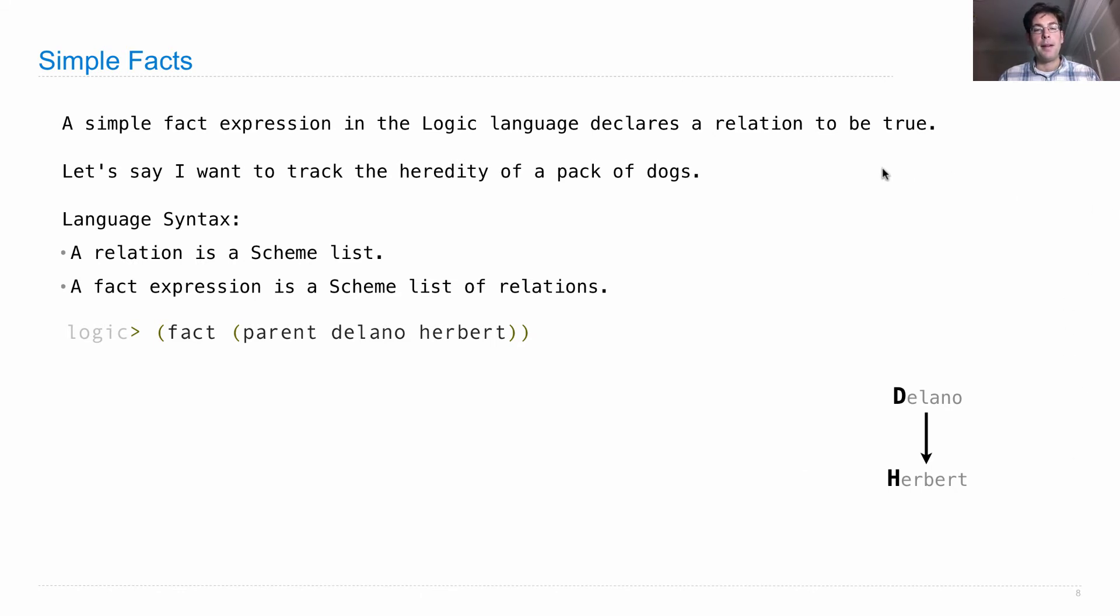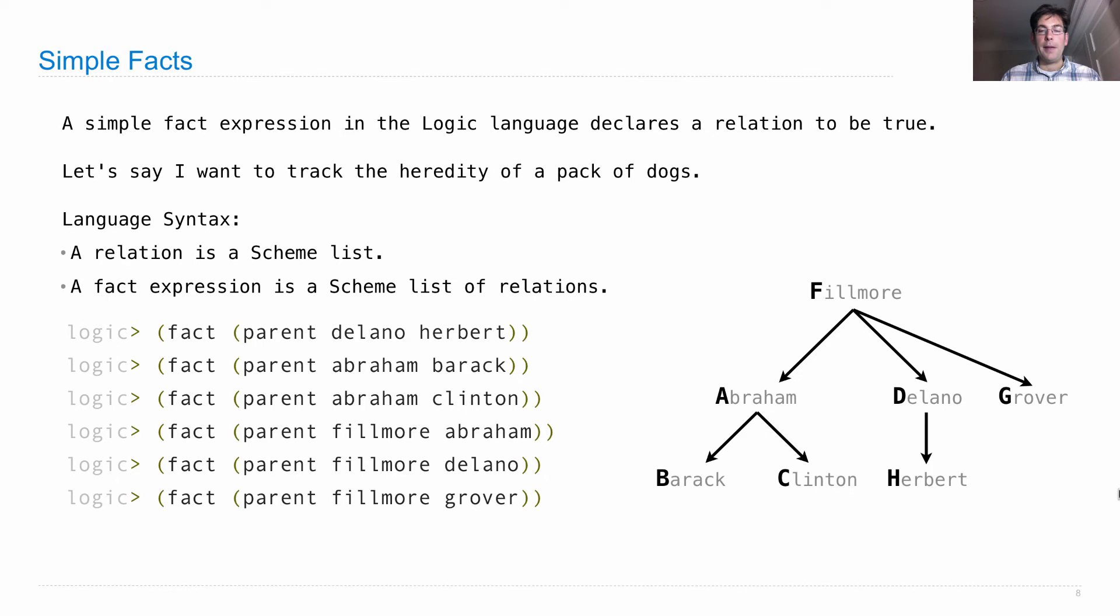We're going to keep track conceptually of all the facts we've created. The parent relationship also exists between Abraham and Barack. Notice I've chosen to name all my dogs after US presidents. We could have a structure that forms a tree when we add in Fillmore, Grover, and Eisenhower. This is the Logic prompt. I write out 'fact' and then whatever fact I'm trying to state, and it just remembers all the facts I've created so far.